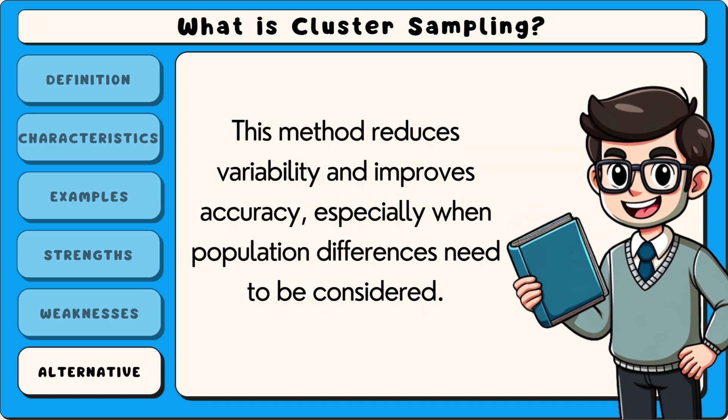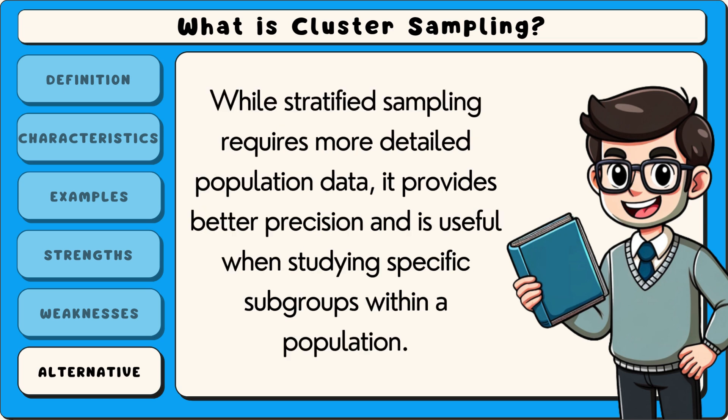This method reduces variability and improves accuracy, especially when population differences need to be considered. While stratified sampling requires more detailed population data, it provides better precision and is useful when studying specific subgroups within a population.